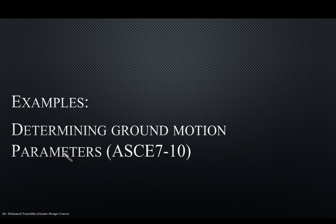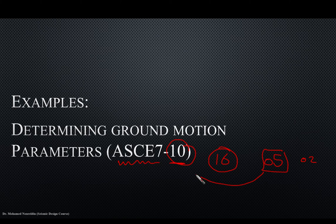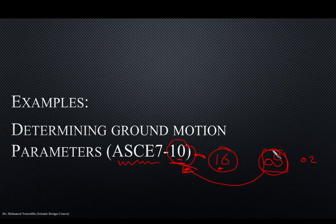One thing to highlight: we are going to use ASCE 7 Edition 10, even though we now have the 2016 edition. There were also previous editions in 2005 and 2002. There is a great difference between the 2005 and 2010 editions, but the change between 2010 and 2016 is not very large, especially regarding risk-targeted ground acceleration parameters. So I'm going to work on the 2010 edition for the examples.